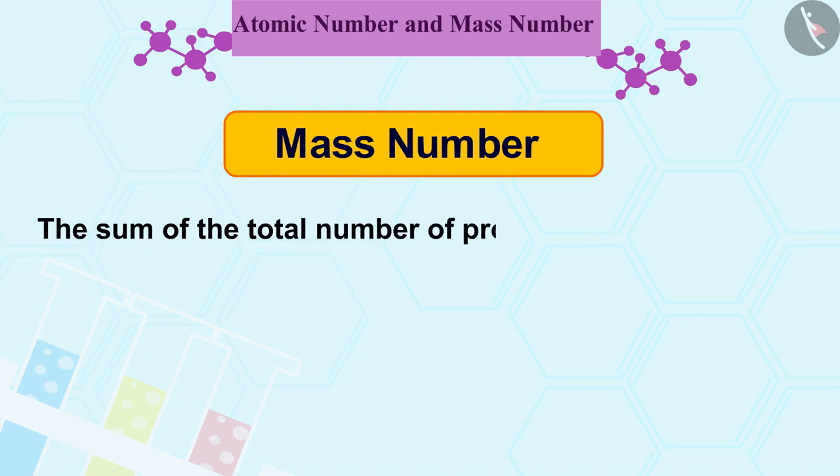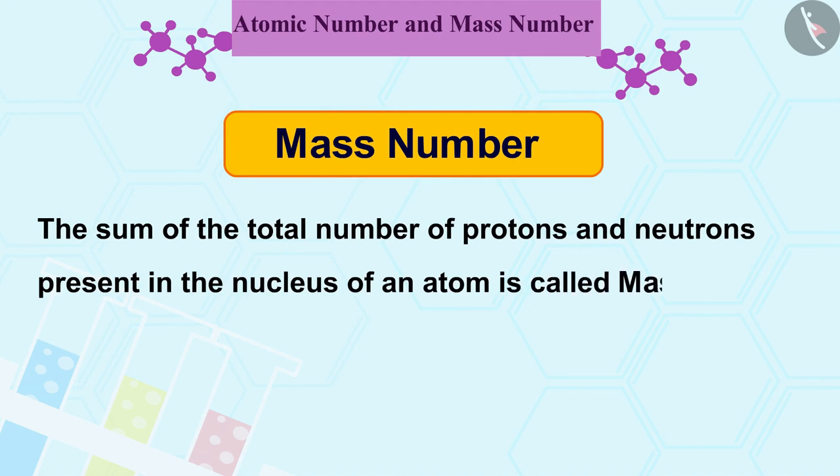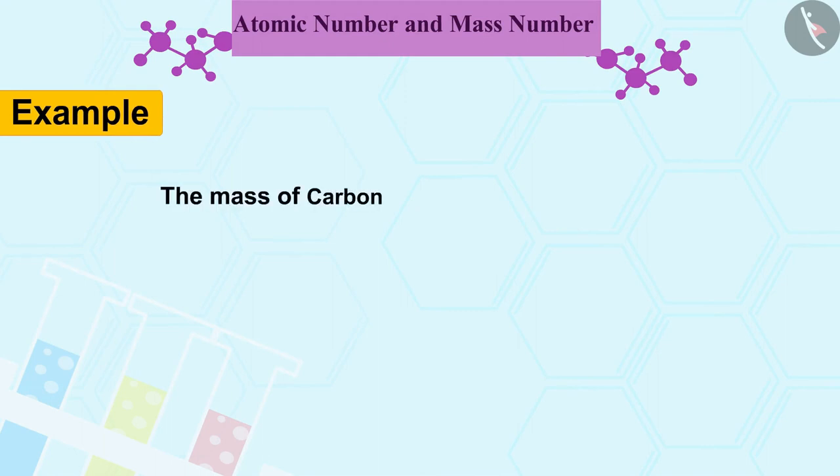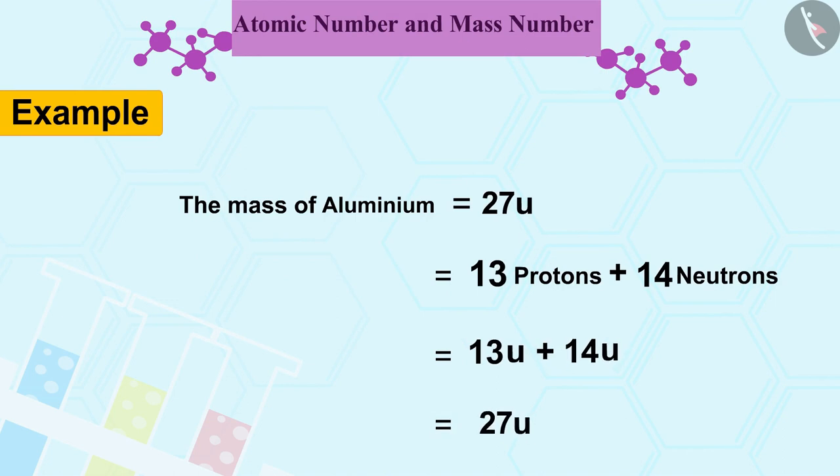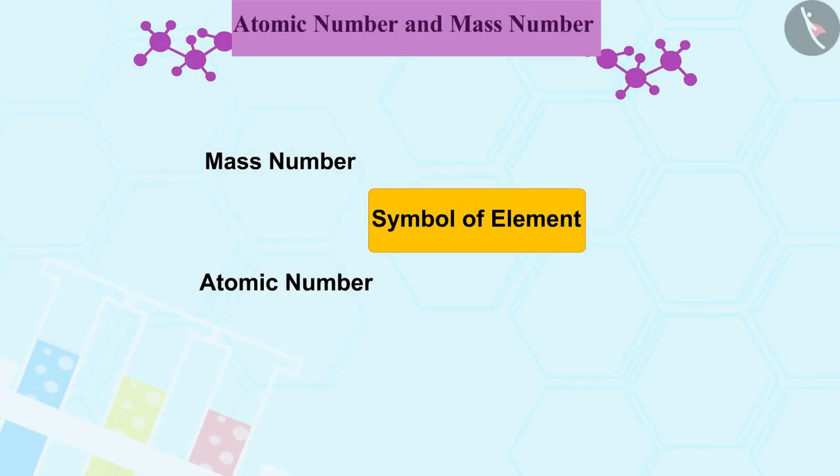The sum of the total number of protons and neutrons present in the nucleus of an atom is called Mass Number. For example, the mass of carbon is 12u because it consists of 6 protons and 6 neutrons. Similarly, the mass of aluminium is 27u because it has 13 protons and 14 neutrons. In the notation for an atom, the atomic number, mass number and symbol of the element are to be written as follows, such as nitrogen is written like this.